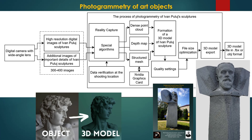The photogrammetric method was used to create 3D models of the memorial sculptures of Ivan Poulou. It is based on the processing of several hundred photos taken using a digital camera with wide angle lens in high resolution with partial overlap of image areas taken at differing angles of view. Separately, several circular passes at different heights relative to the scanning object and additional pictures of important details were performed. On the basis of a set of photographs using specialized algorithms, a dense point cloud, a depth map, and a structured mesh of an object are created with ability to generate post-processing of the model and export it in the required format.